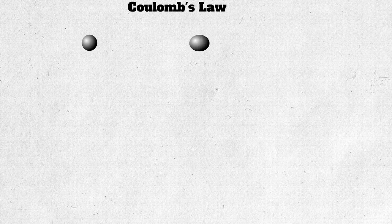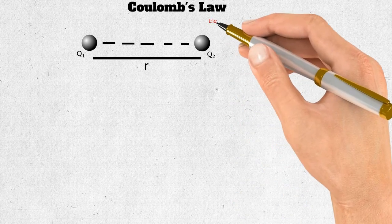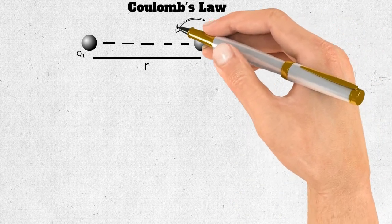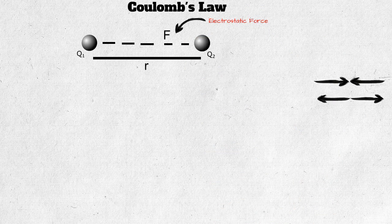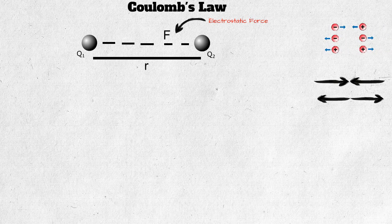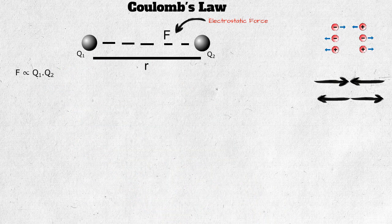Let's start with Coulomb's law. Let's take two charged particles q1 and q2 separated by a distance r. The charged particles will interact with each other through a force called the electrostatic force, represented by F. The force can be attractive or repulsive depending upon the nature of the charges — unlike charges attract each other while like charges repel each other.